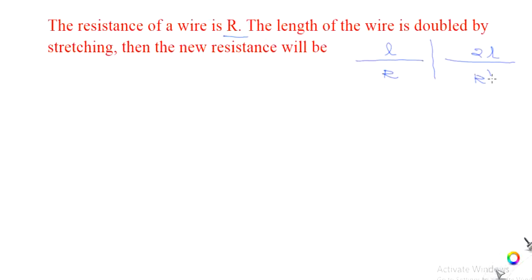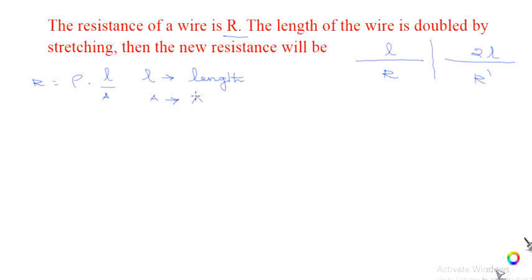We know the formula: resistance R is equal to rho into L divided by area of cross section A, where L is the length of the wire and A is the area of cross section of the wire. Now we have to calculate the new resistance after stretching, which will be R dash.